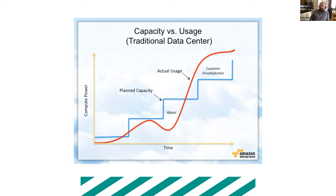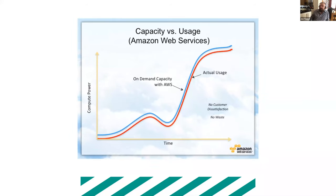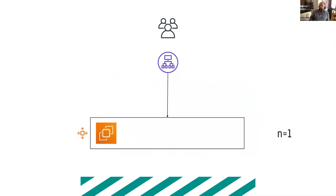Designing for elasticity means your demand curve and your provided infrastructure curve track each other — no waste from over-provisioning, and no upset customers from under-provisioning. If designed correctly, your infrastructure can be functionally infinite as far as most workloads are concerned. One example of this is auto scaling groups: a load balancer services customers at the top, balancing to an auto scaling group that adjusts in size as needed.